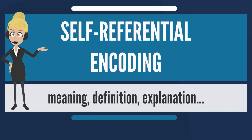Also, people tend to evaluate things related to themselves more positively. This is thought to be an aspect of implicit self-esteem. For example, people tend to prefer their own initials over other letters.